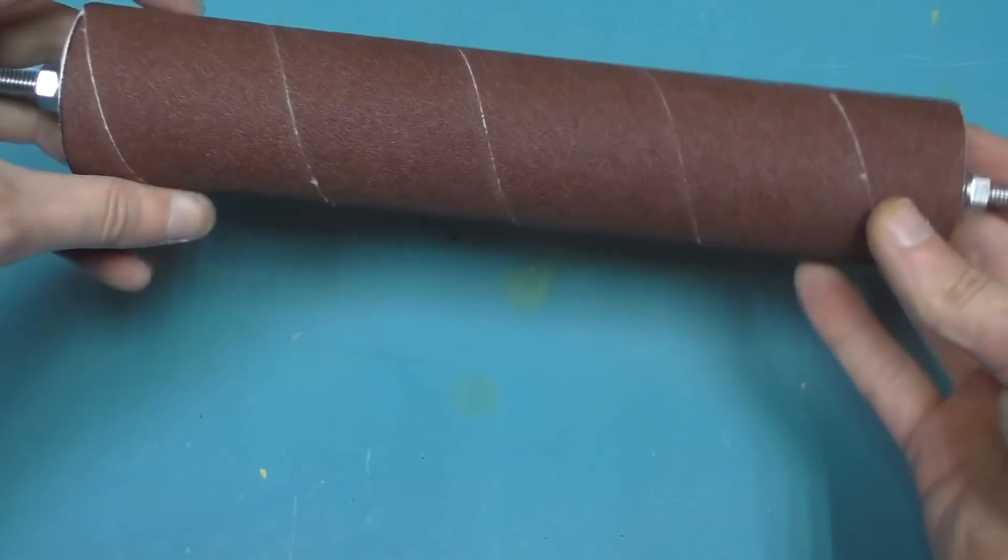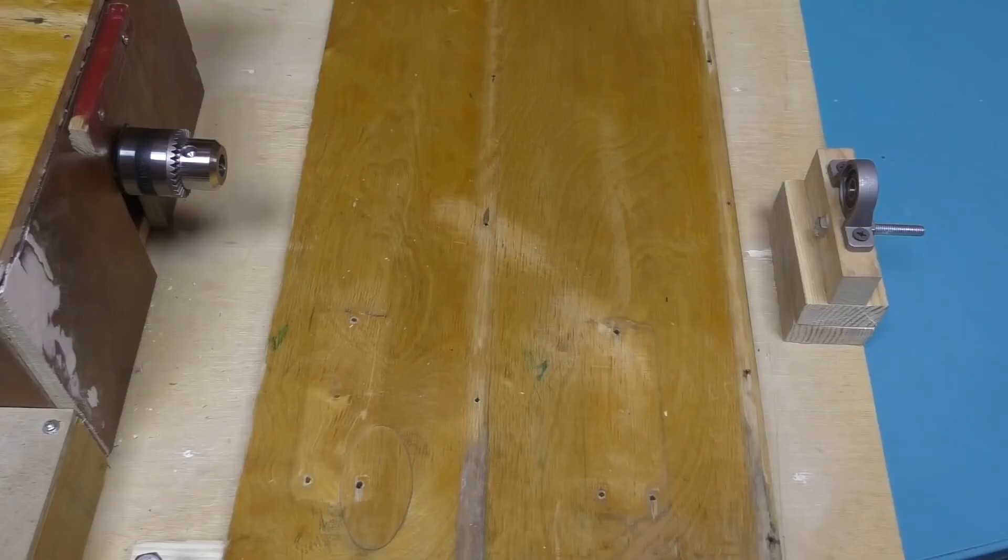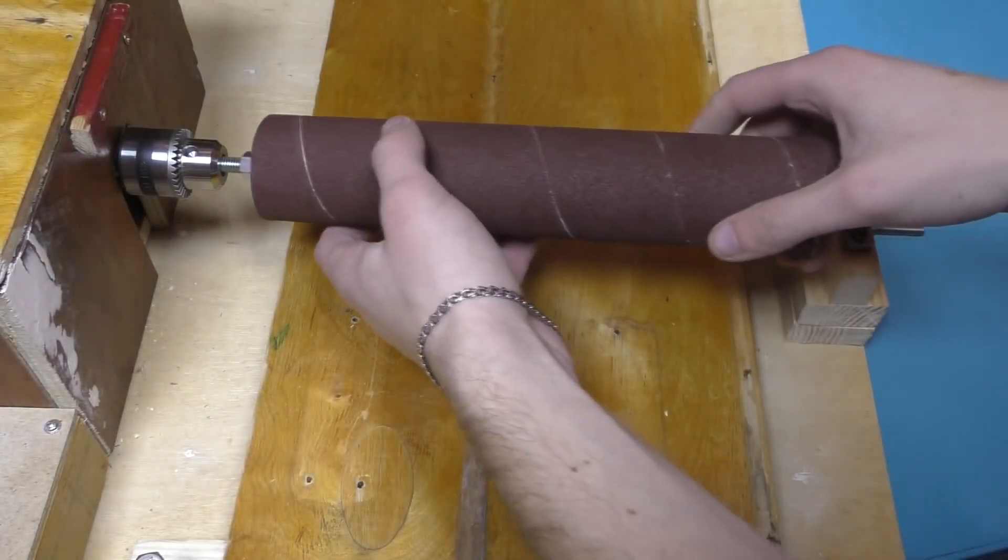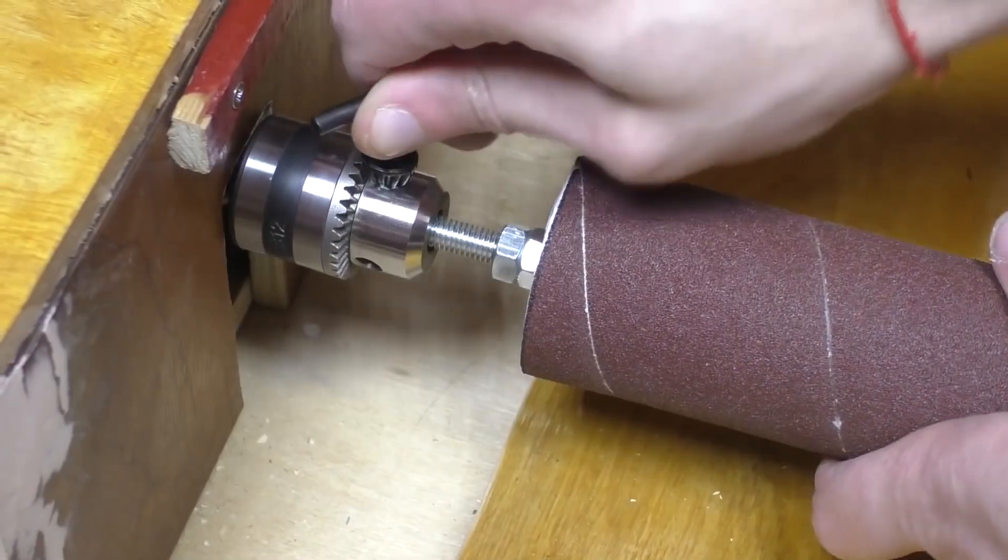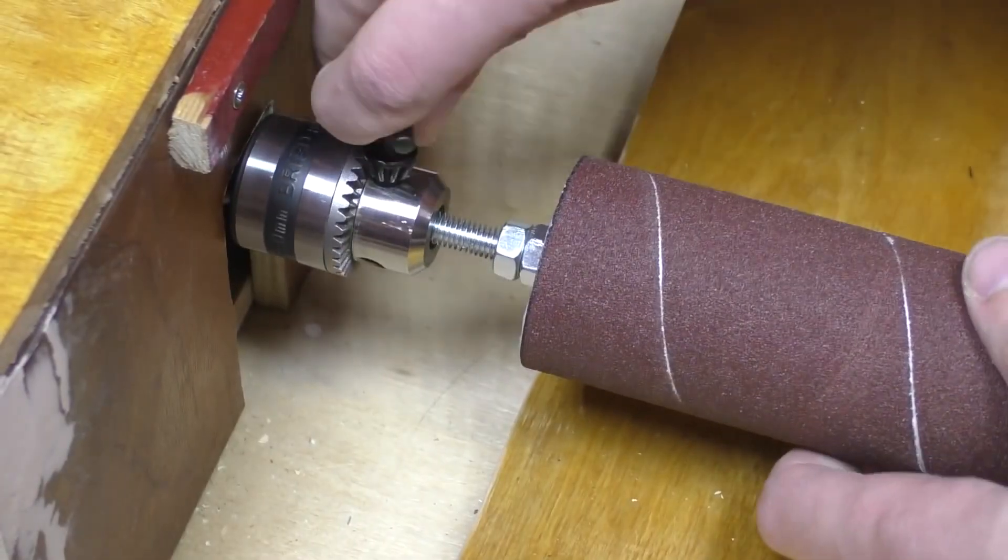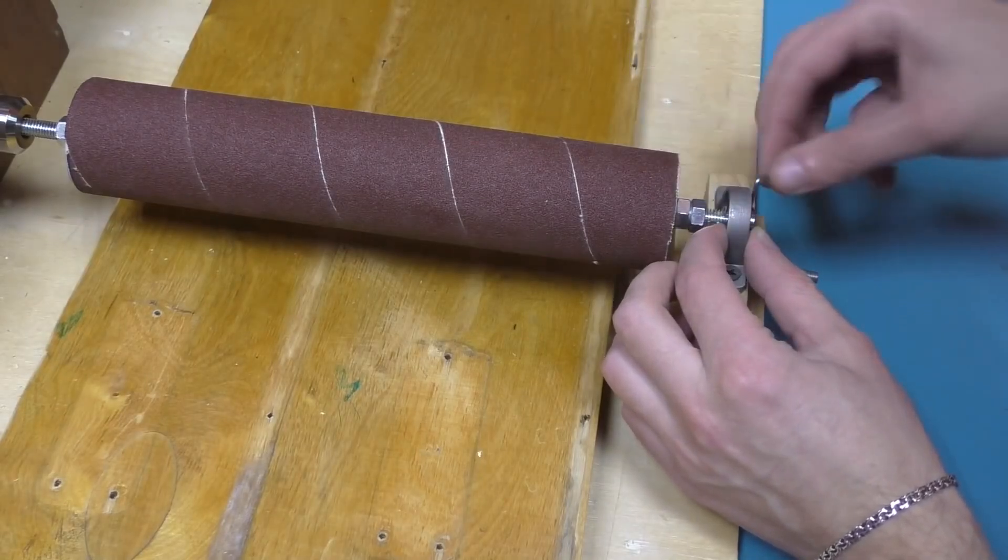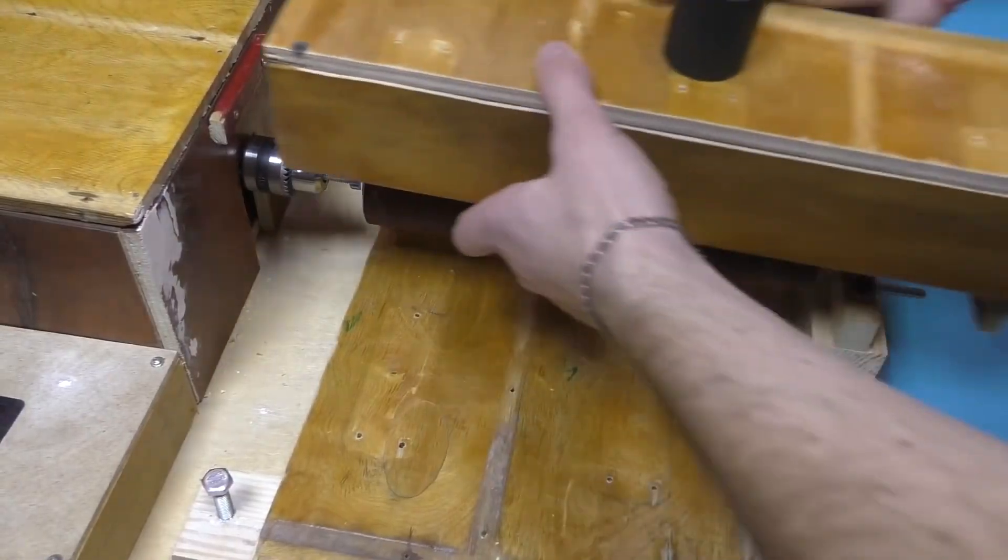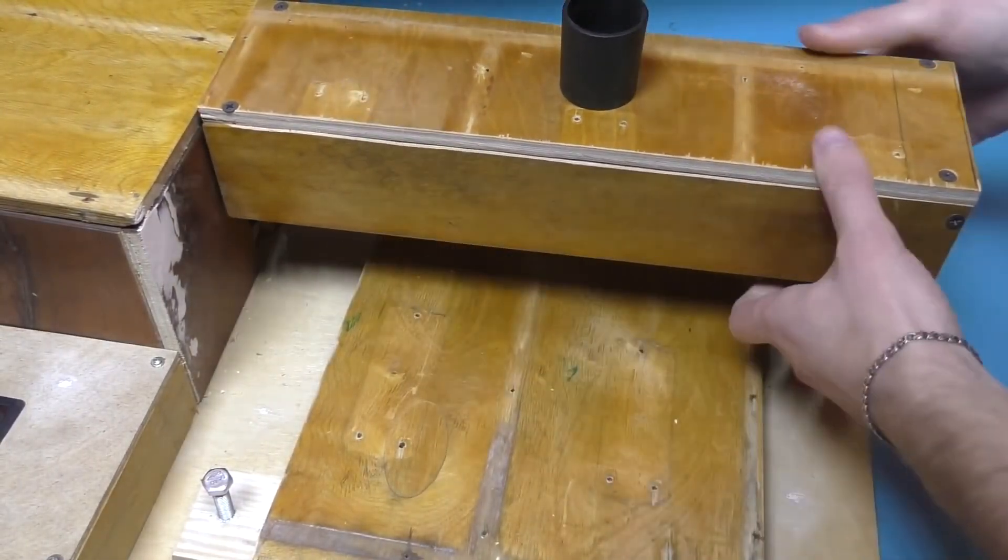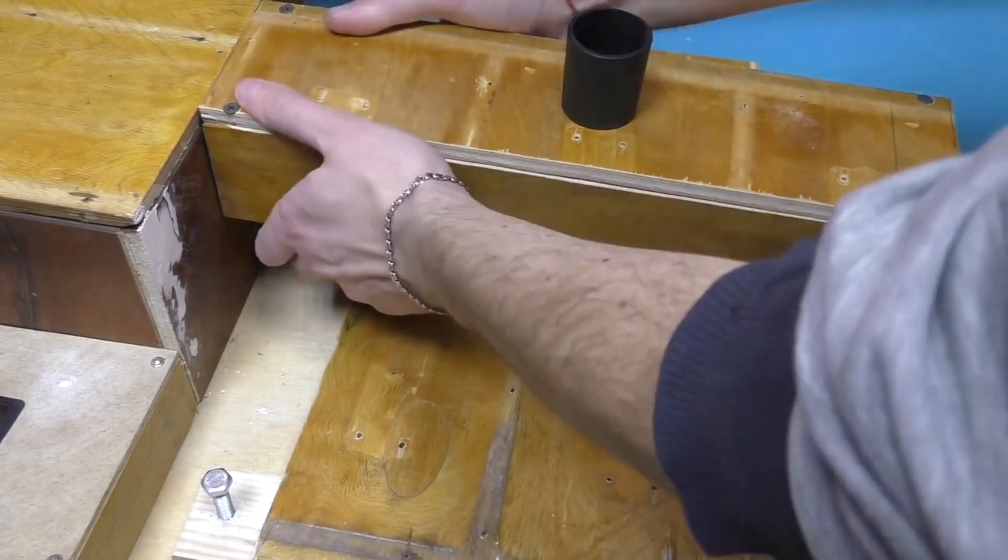And this is the sanding drum we've got. Now you can clamp it in the chuck and the thrust bearing. Put the protective cover on top, which you can connect the vacuum cleaner to for dust removal.